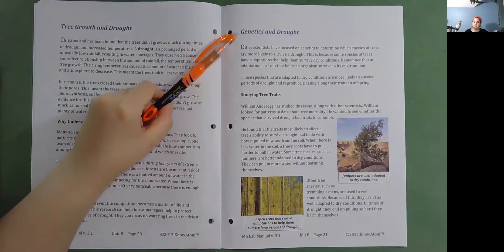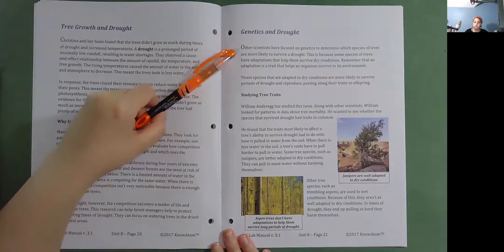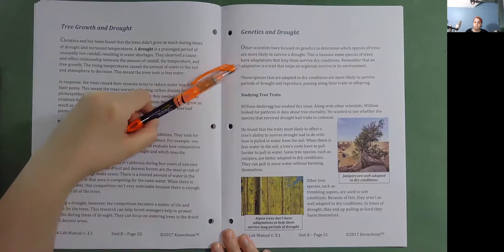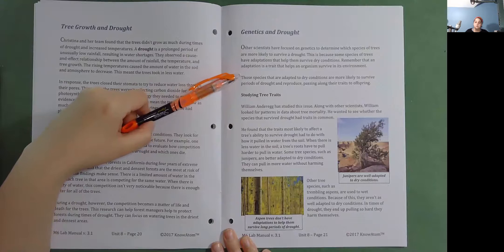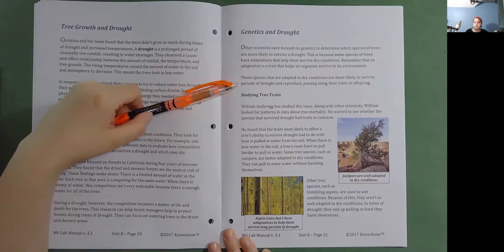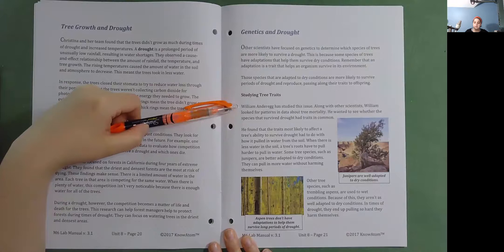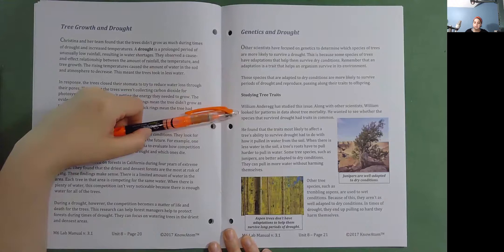Genetics and drought. Other scientists have focused on genetics to determine which species of trees are more likely to survive a drought. This is because some species of trees have adaptations that help them survive dry conditions. Remember that an adaptation is a trait that helps an organism survive in its environment. Those species that are adapted to dry conditions are more likely to survive periods of drought and reproduce, passing along their traits to offspring. Studying tree traits. William Anderegg has studied this issue. Along with other scientists, William looked for patterns and data about tree mortality. He wanted to see whether the species that survived drought had traits in common.